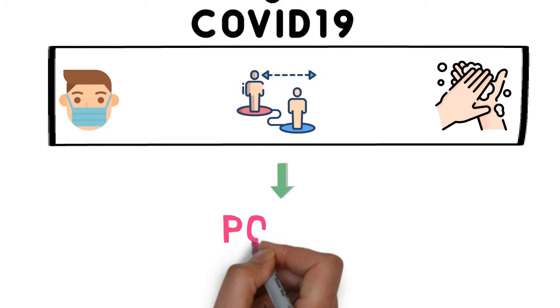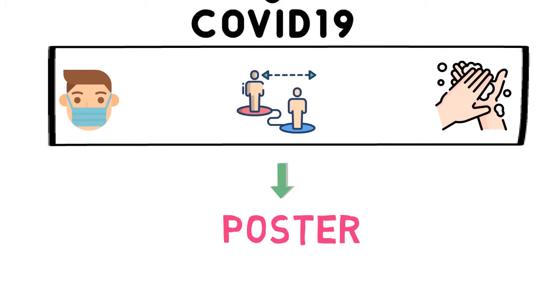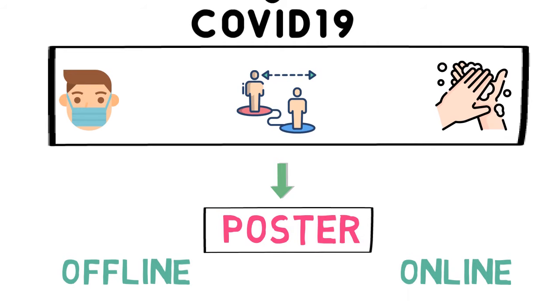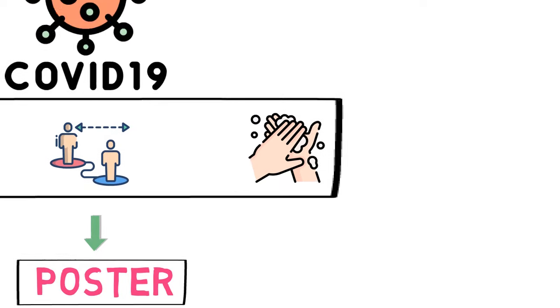One of the ways is you create a poster on it and spread it offline as well as online. In this way, your message will be visually more appealing and that's what we are going to learn. Today, in this video, we will learn all about poster making.